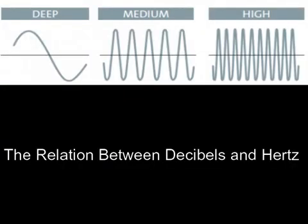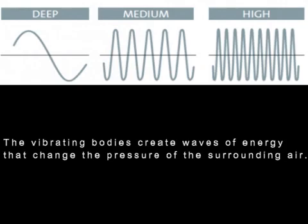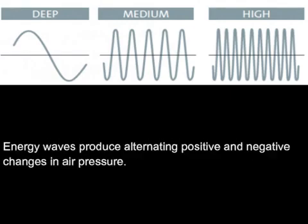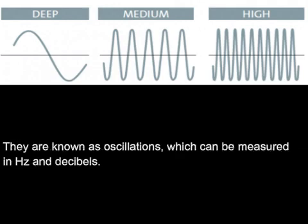Vibrating bodies create waves of energy that change the pressure of the surrounding air. The human ear picks up this pressure change and our brain recognizes them as sound waves. Energy waves produce alternating positive and negative changes in air pressure, known as oscillations, which can be measured in Hertz and decibels.